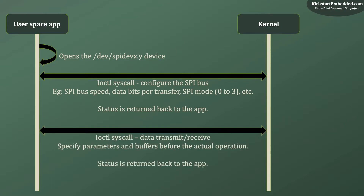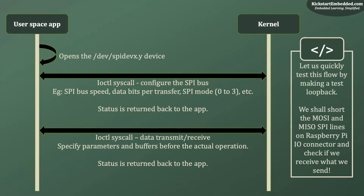If successful, the application will then send and receive the appropriate data. The status for each operation is received by the application and can be used to decide the next step. The request codes for SPI configuration, SPI transmit and receive, etc. are all unique. Let us test this flow in a quick loopback test.